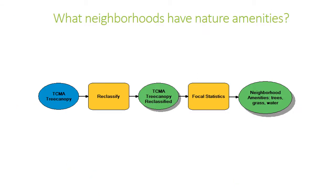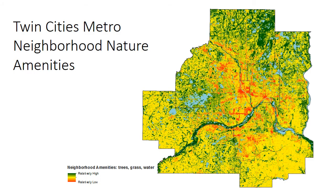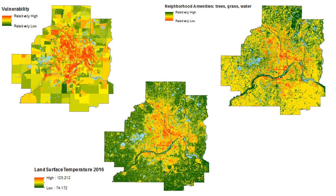Next, I wanted to find neighborhoods that were lacking nature amenities, because the literature suggests these areas would tend to be hotter. I used data from the 2015 Twin Cities Metropolitan Area Urban Tree Canopy Assessment to measure how prevalent nature amenities like trees, grass, and water were in each neighborhood. Here we see the range of neighborhood nature amenities — again, we see more red in the center of the map. Here are all three maps representing vulnerability to the urban heat island effect, showing a similar pattern with more vulnerability to urban heat in the center than in the surrounding areas.